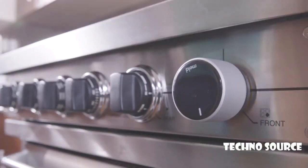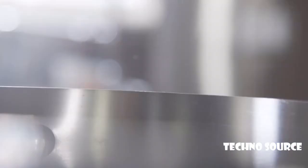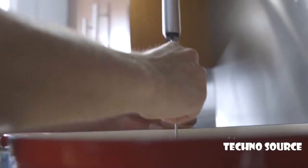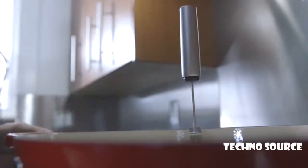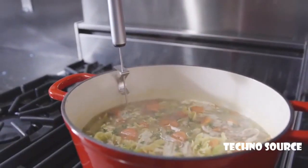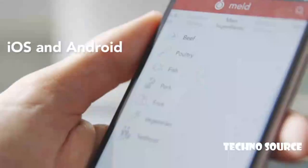The Meld knob knows how to adjust temperature based on data it receives from the Meld clip. The clip attaches to the cookware you already own and continuously measures the temperature of the food you are cooking to within less than a degree.